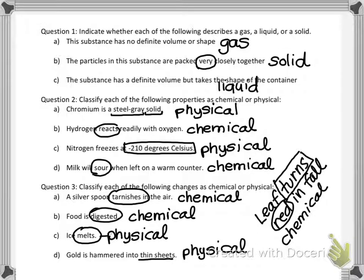If the sentence simply said 'the leaf is red,' then we're just describing the leaf — that's a physical property. But if it says 'the leaf turns red,' you have to think it through. I don't try to trick you, but be aware: think through the whole process, and ask whether something new is forming.